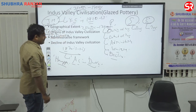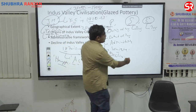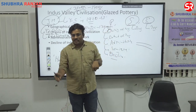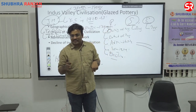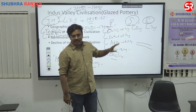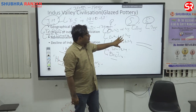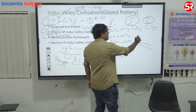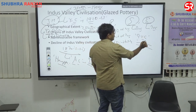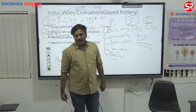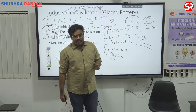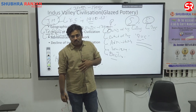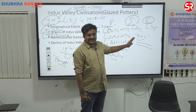After excavating the first sites, these people primarily focused on sites in and around the Indus River, and because most of the sites are present here, this civilization was given the name Indus Valley Civilization. But after India became independent with the partition, most of the Indus Valley Civilization sites went to Pakistan.